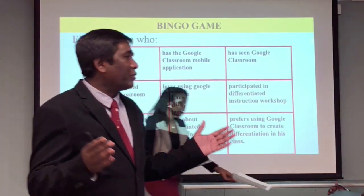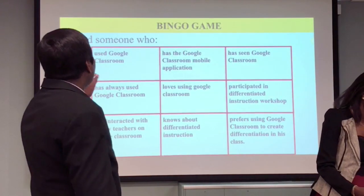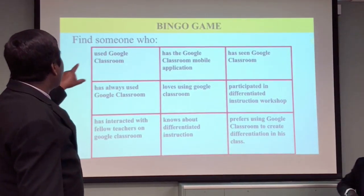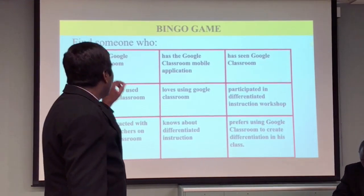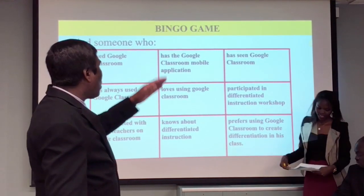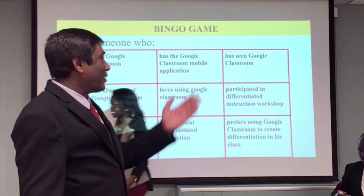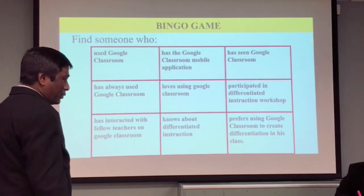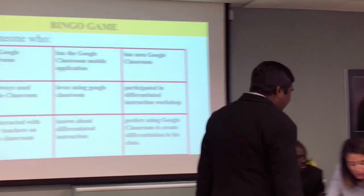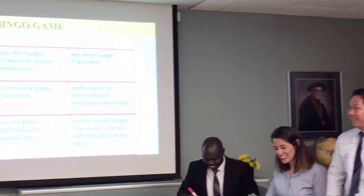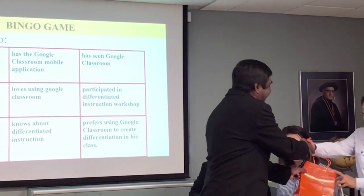The bingo game is very easy. You have some questions like: find someone who used Google Classroom, find someone who has the Google Classroom mobile application. If you can find the name and match in a column, row, or diagonal, then you shout bingo and get a gift. Ask each other — I want to see who can do it fast. Thank you, Arvin. Well done.